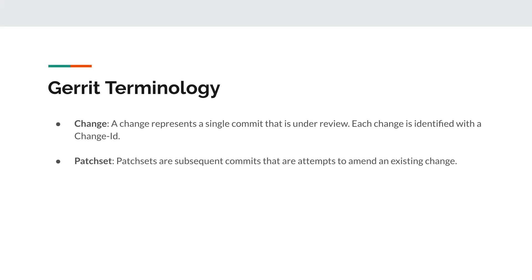Here is some Gerrit terminology that may come up. A change represents a single commit that is under review. Changes are identified with change IDs. Patch sets are subsequent commits attempting to amend an existing change.